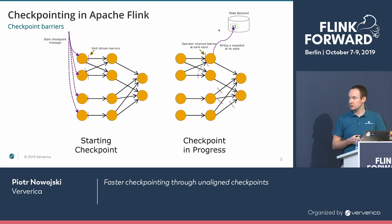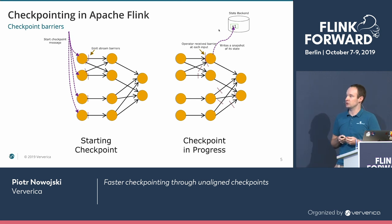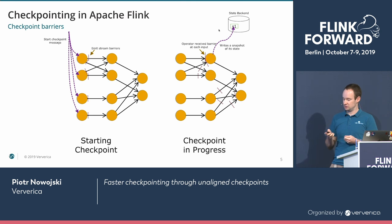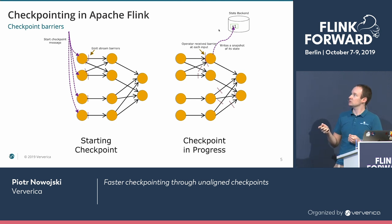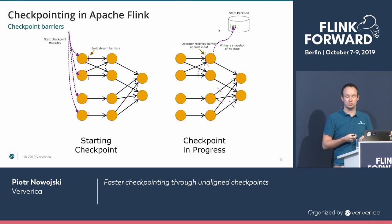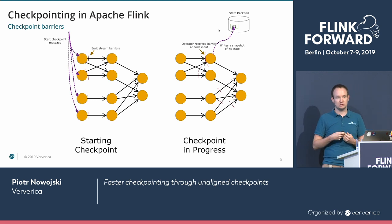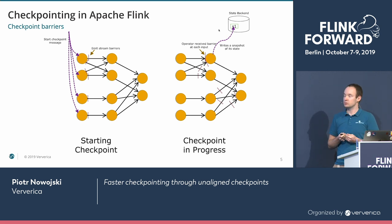How does it work on a larger scale? Here we have some example job graph with operators and network channels between them. If Flink decides to take a checkpoint, it injects checkpoint barriers at the sources of the job graph. The checkpoint barriers then start flowing through the job graph, reaching successive operators. Once some operator receives all checkpoint barriers from all of its input channels, that's when it takes a snapshot of its state and forwards the checkpoint barriers downstream.